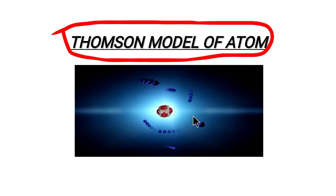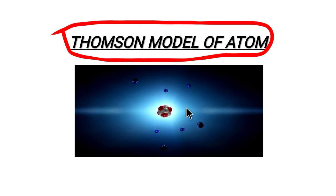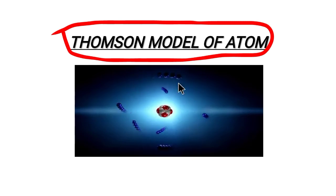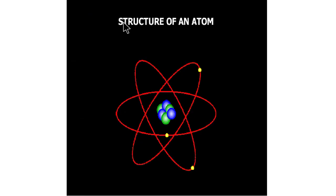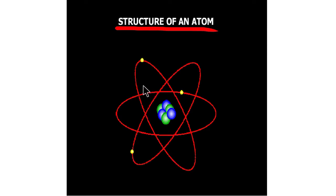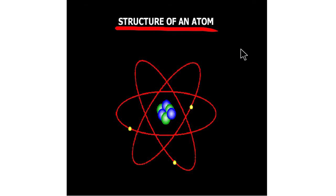As you can see, in the atom there are some electrons, protons, and neutrons. Next, it is the structure of the atom. The structure of the atom is related to the detail of the atom.